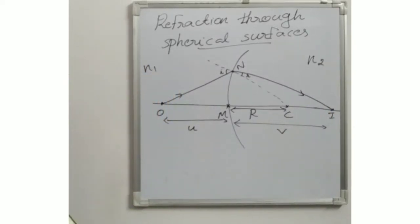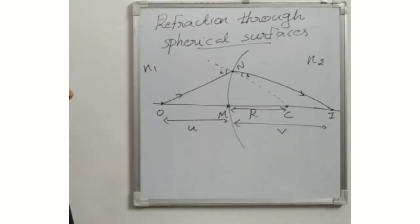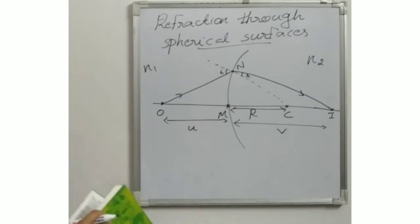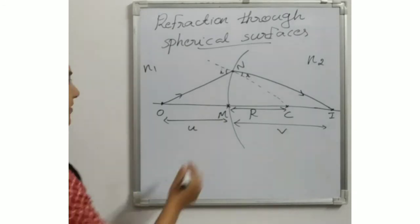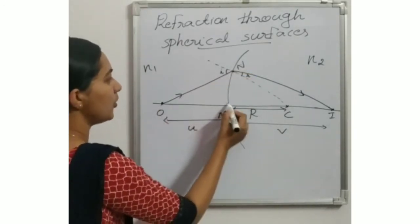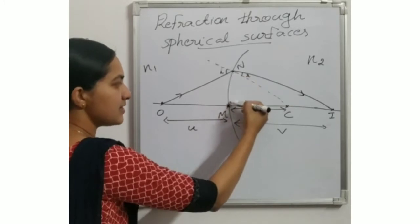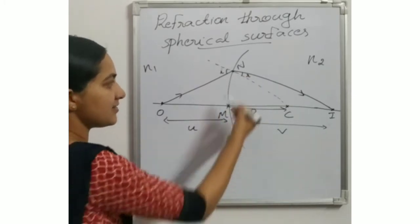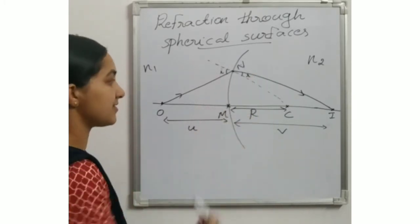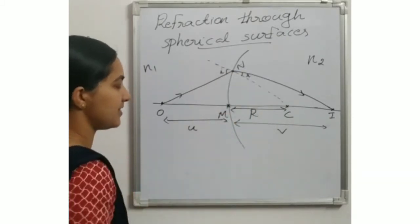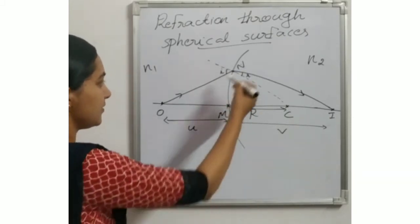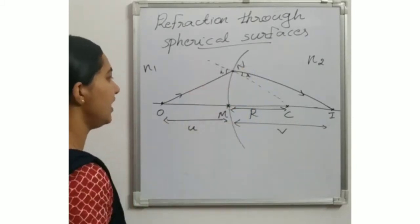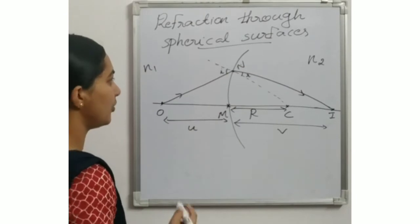Now we can derive the relation between the different quantities here. For that, we need to consider three triangles. The first one is triangle N-O-M. Even though this is a spherical surface, approximately we can consider it as a straight surface.